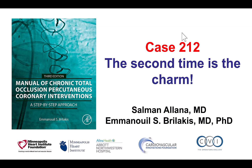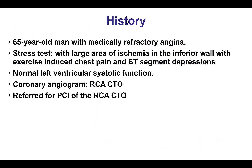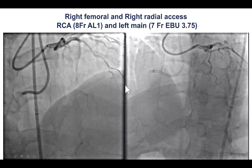This is Salman Alana and Manos Berlakis, and this is case 212 for the Manual of CTO Interventions. This is a case that required a second attempt before achieving success. The patient was a gentleman with refractory angina due to inferior ischemia in the setting of a right coronary artery chronic total occlusion.